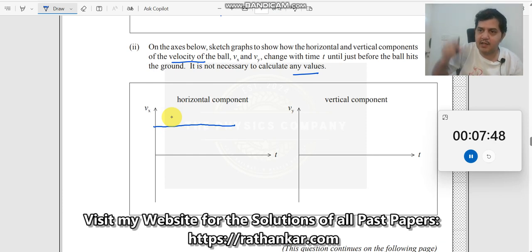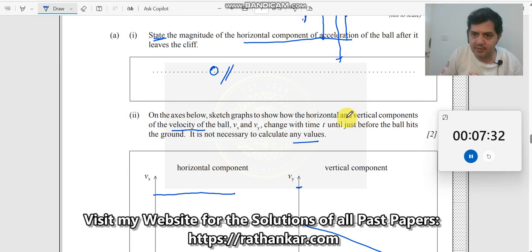Therefore, the horizontal component shows no change in vx, so you will always get a straight line parallel to the t-axis. The vertical component is directed downwards, so you should start from here where vy equals zero when you throw it horizontally.